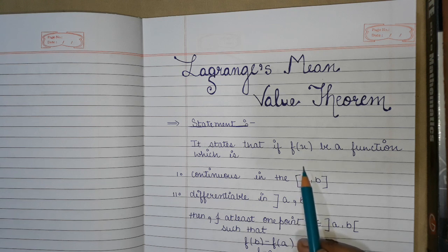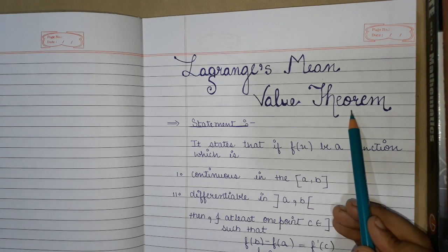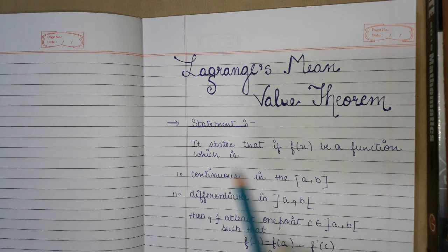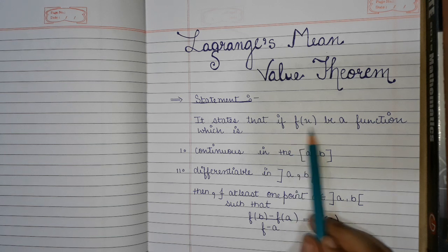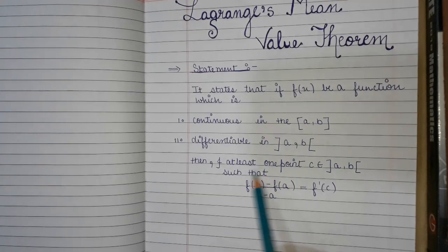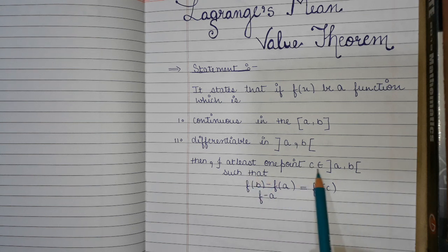In this video we will prove Lagrange's Mean Value Theorem. The theorem states that if f(x) is a function which is continuous on closed interval [a, b] and differentiable on open interval (a, b), then there exists at least one point c belonging to open interval (a, b).